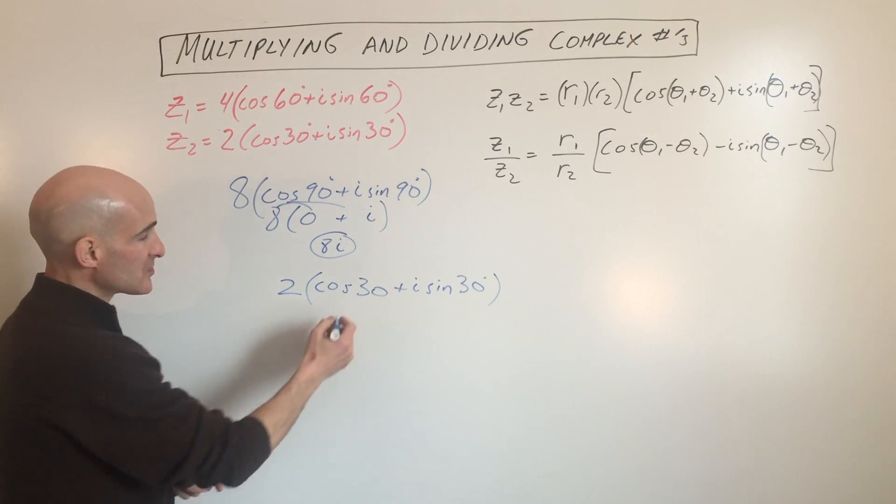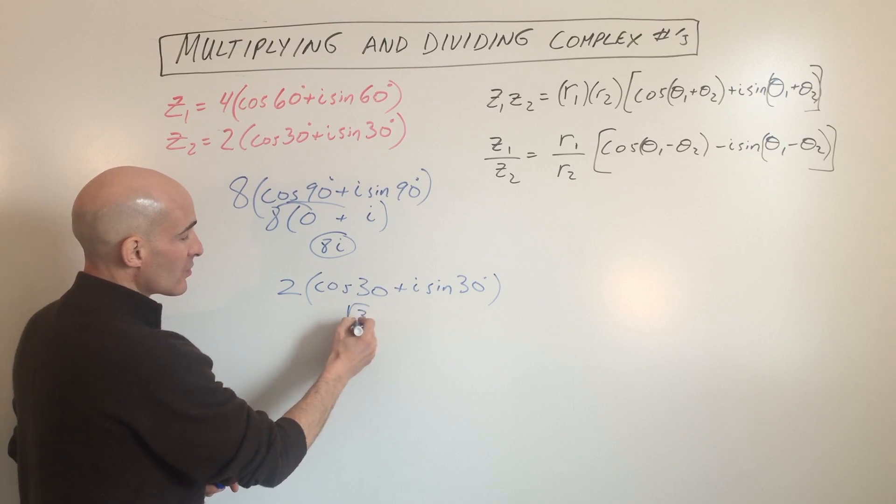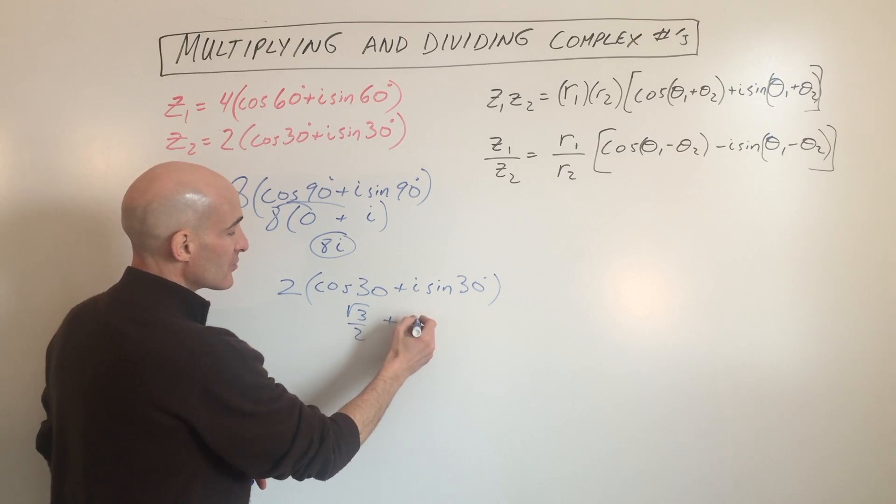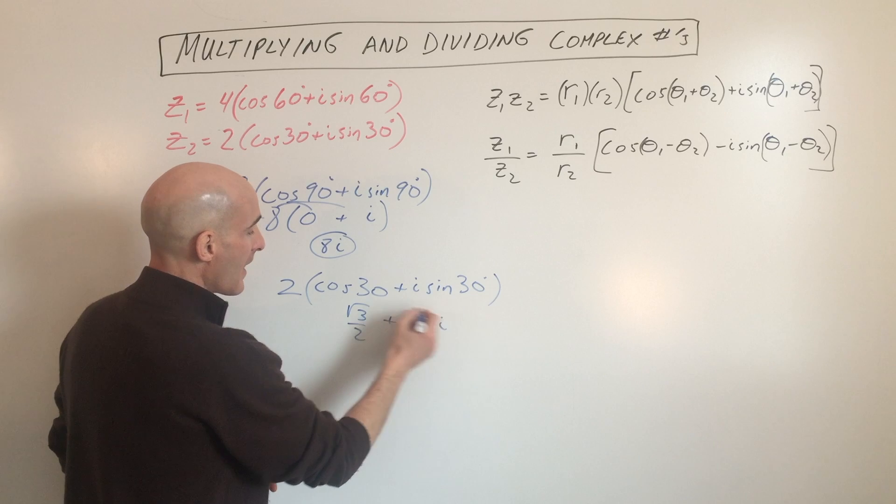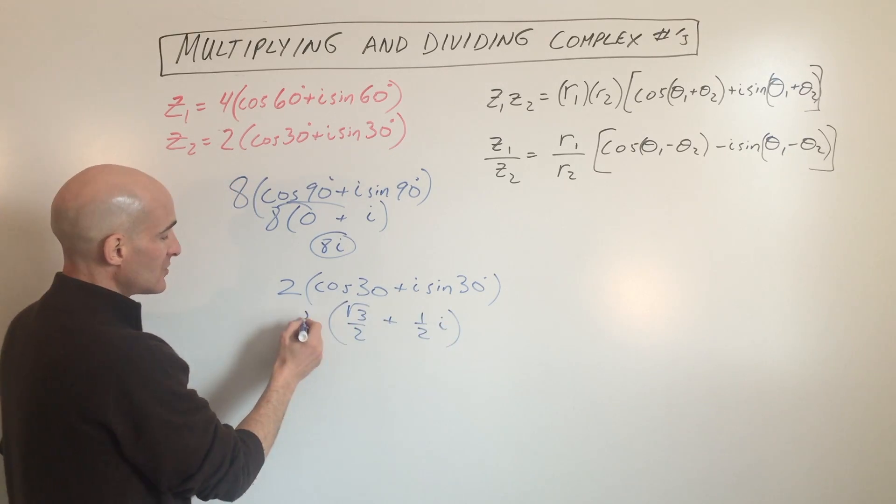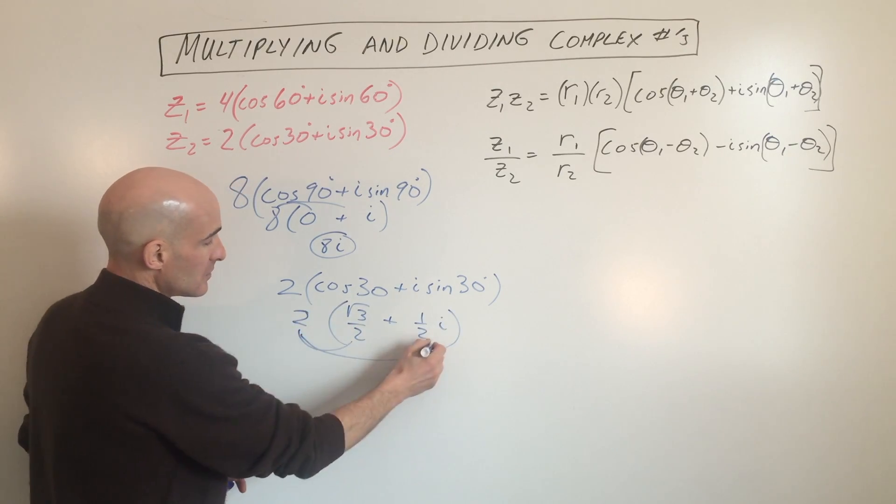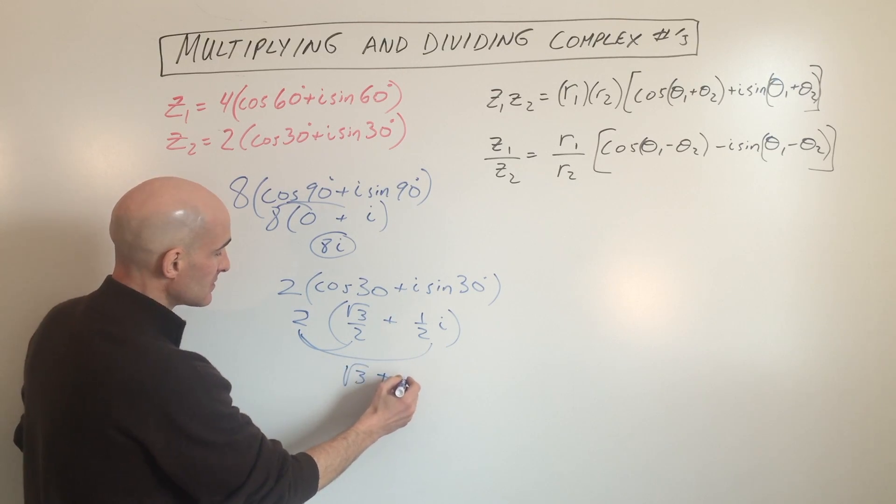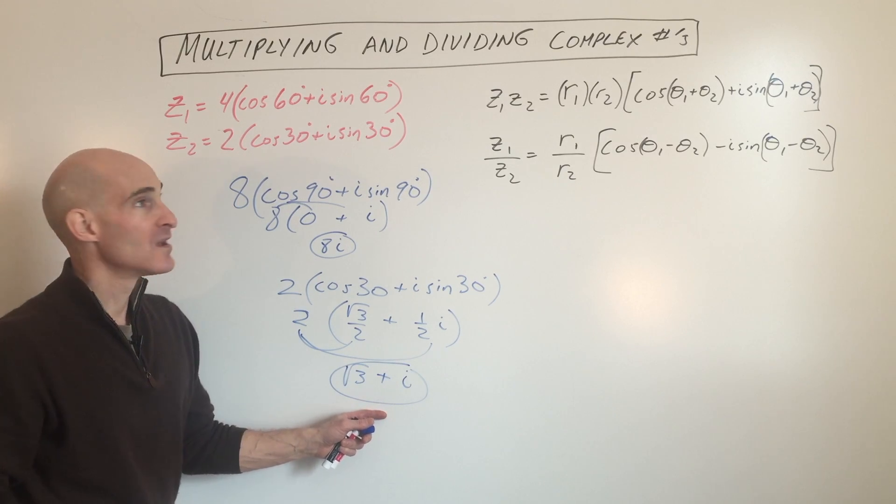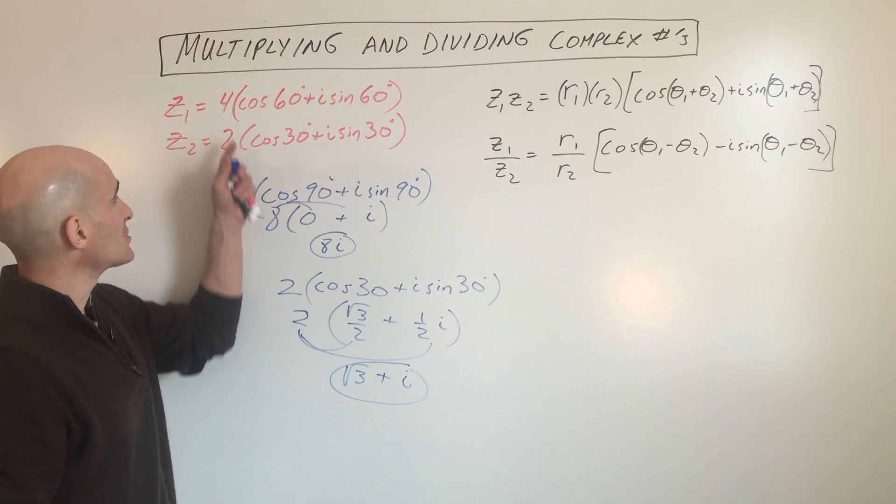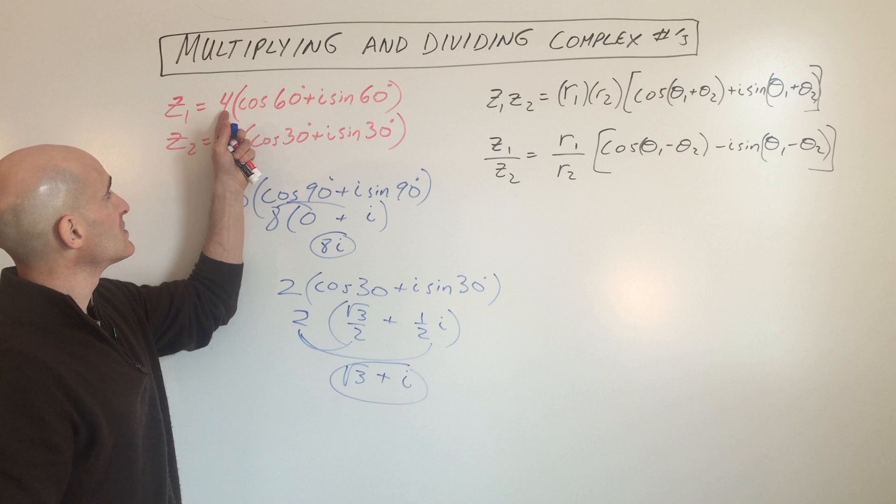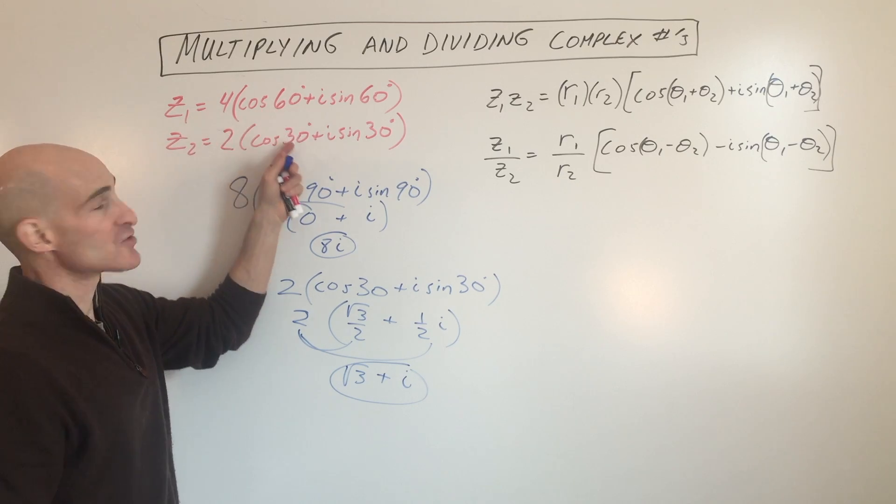And if we want to simplify, cosine of 30 is square root of three over two, and sine of 30 is one half. And so by distributing this two, we get square root of three plus i. And so that's back into the standard form. So dividing, you want to just take z1 divided by z2, and then you want to subtract the angles.